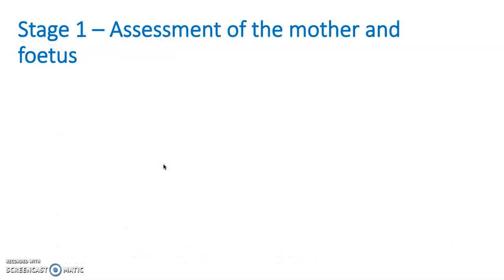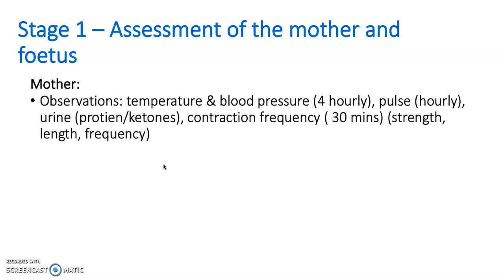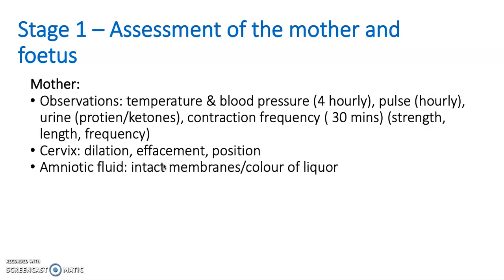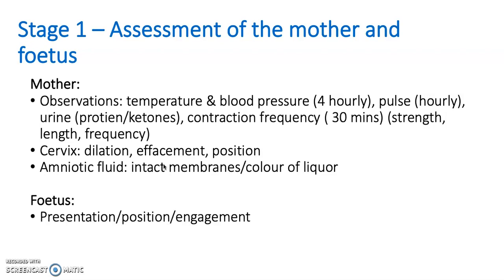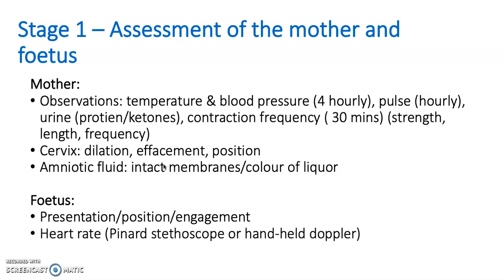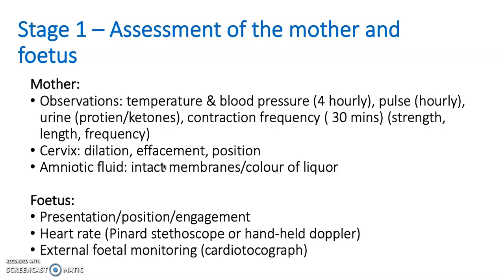For assessment of the mother during stage one, we do observations like temperature and blood pressure every four hours, pulse, urine, and contraction frequency — noting how strong they are, how long they are, and how frequent they occur. We also assess the cervix for effacement, position of the baby, and how dilated it is, as well as checking amniotic fluid to see if the membranes are intact. For the fetus, we assess position, presentation, and engagement, monitor the fetal heart rate, perform external fetal monitoring via CTG, and fetal scalp blood sampling if needed.